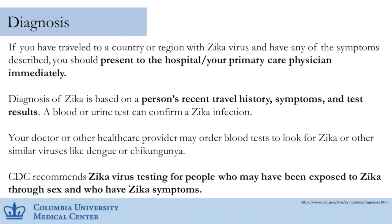For diagnosis: if you've traveled and develop any symptoms, go to your doctor right away. Diagnosis is based on travel history, symptoms, and test results — typically a blood and urine test. If you present within one to two weeks after infection, the virus can be detected fairly easily. After that window, it's harder to differentiate from other viruses like chikungunya and dengue, but there are special tests now. Blood and urine are sent to the city health department for testing.